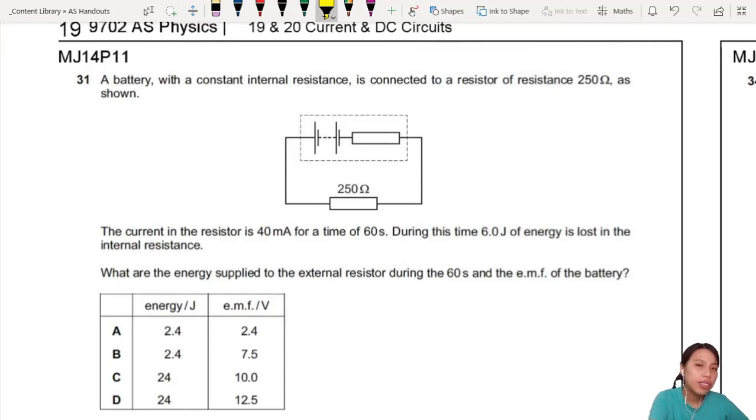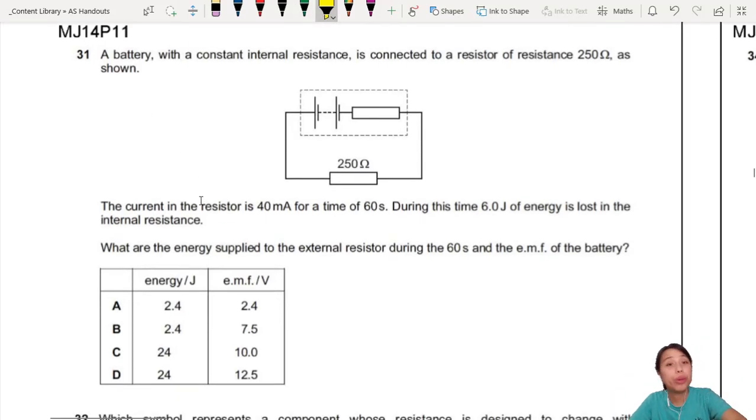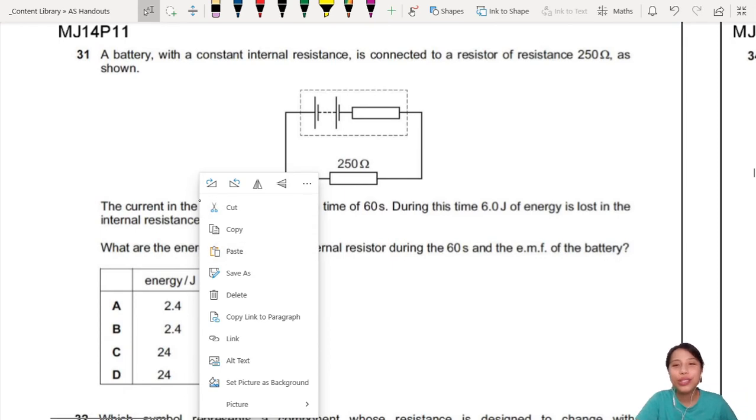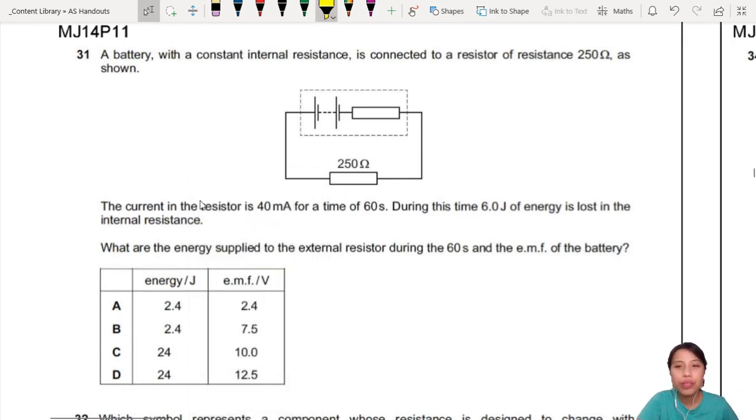A battery with constant internal resistance is connected to a resistor of resistance 250 ohm as shown. The current in the resistor is 40 milliamps. I'm going to label this thing because it's going to be a lot of information later. So 40 milliamps sounds about right for a battery circuit, usually about milliamp scale, for a time of 60 seconds. So this whole thing is running for 60 seconds.